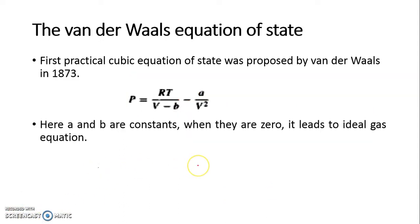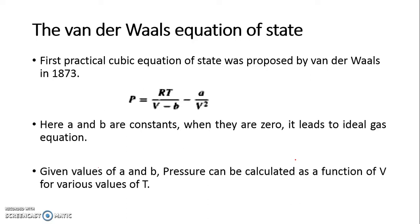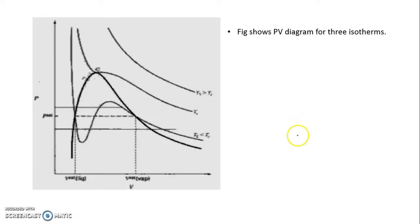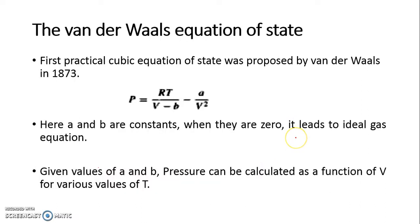When we consider an ideal gas model, both A and B would be zero because there is no attraction and there is no overlapping. For an ideal gas A and B both would be 0 and the equation will reduce to your ideal gas equation of state. Once I know the value of A and B, I can calculate pressure given V and T. Once I know the value of A and B, given pressure and temperature, I calculate volume. Naturally out of P, V, T, if I know 2, the remaining can be calculated with the help of A, B and this equation. This is the basis for Van der Waals equation of state.